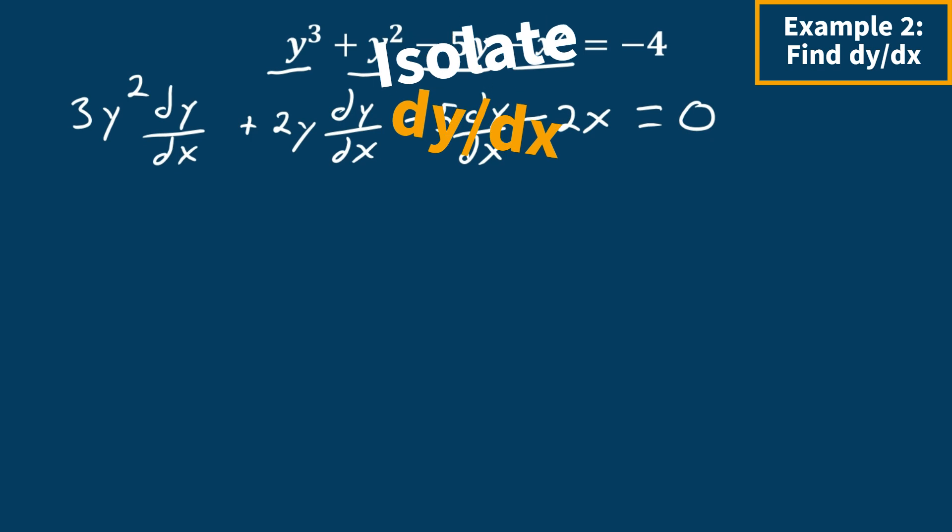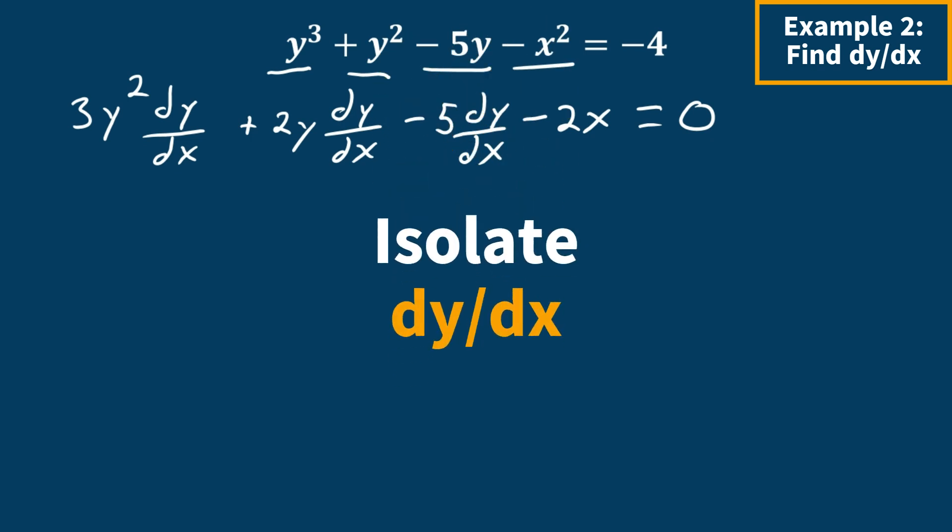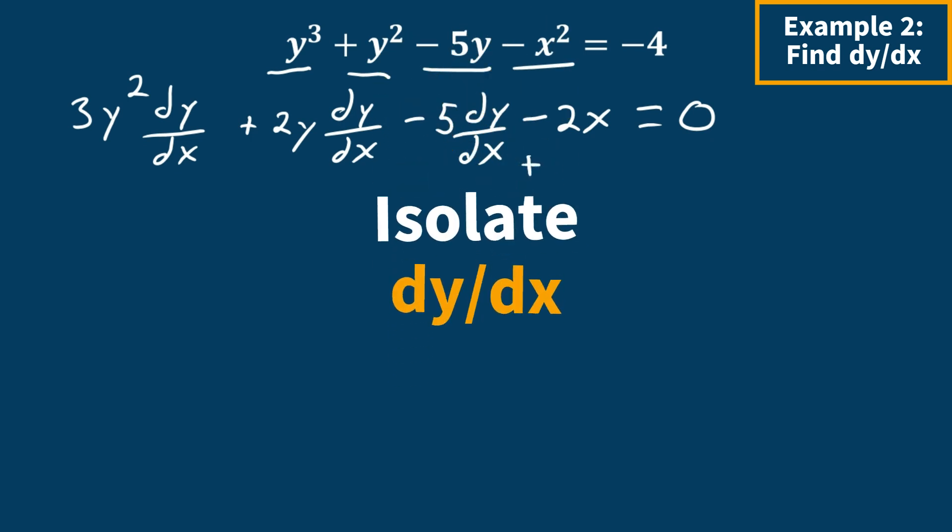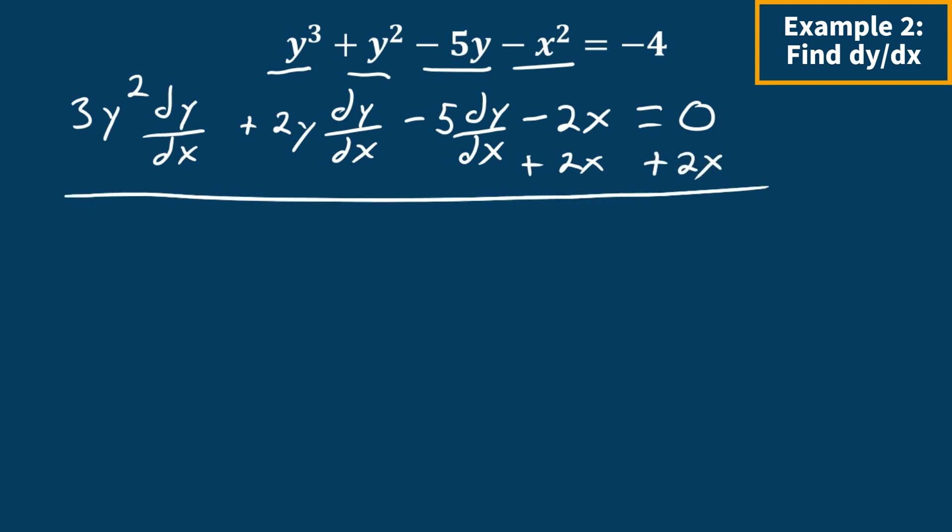What I want to do from here is isolate my dy by dx terms. So I'm going to add 2x to both sides. And these terms are going to cancel. So what we have is 3y squared dy dx plus 2y dy dx minus 5 dy dx is equal to 2x.